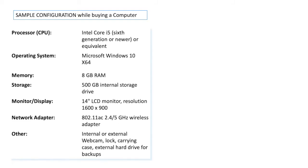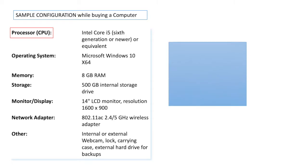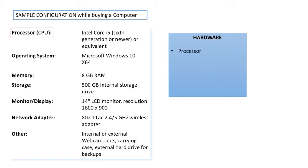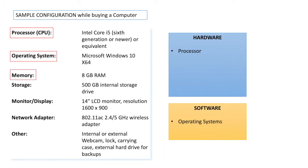When you look at a computer configuration, you can talk about different components. One is the processor — how many CPUs or cores there are, which is part of hardware. The second thing is the operating system — Windows, Linux, or Mac — which comes as part of software. We are categorizing everything into software or hardware, which is important to our customers.